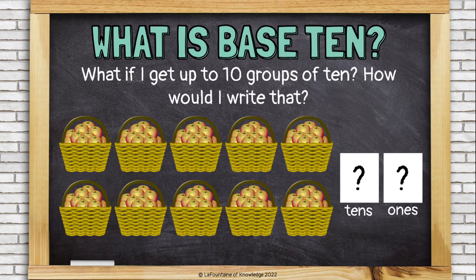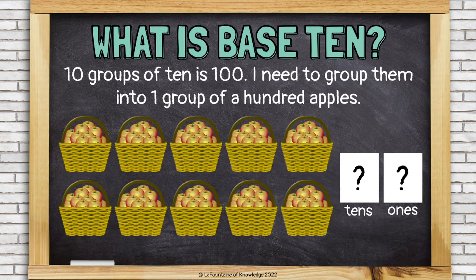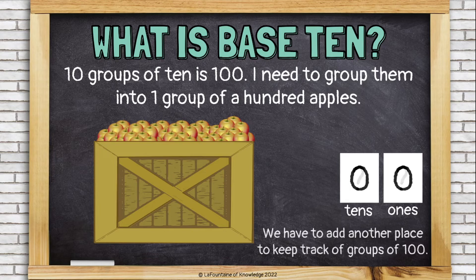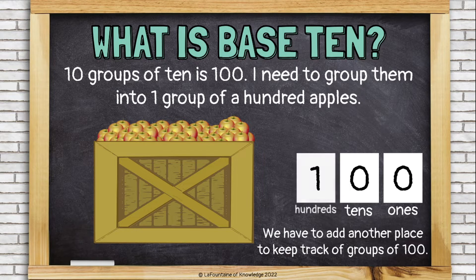What if I get up to 10 groups of 10? How would I write that? 10 groups of 10 is 100. I need to group them into one group of 100 apples. We have to add another place to keep track of the groups of 100: the hundreds place.